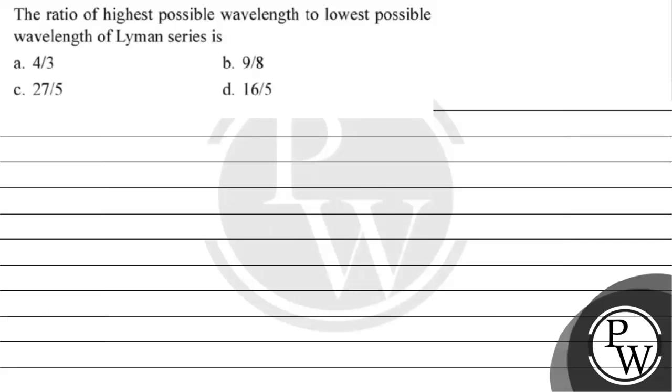Hello, let's read this question. The ratio of highest possible wavelength to lowest possible wavelength of Lyman series is: option A, 4 by 3; option B, 9 by 8; option C, 27 by 5; option D, 16 by 5.